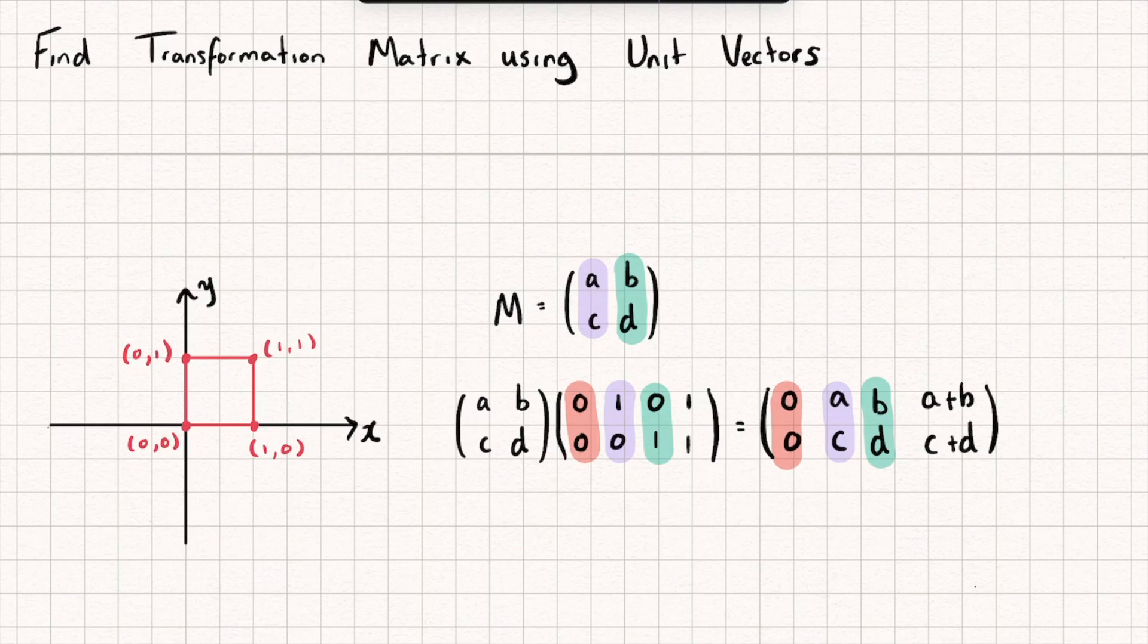And so hopefully you can see now that it's enough to just look at the point (1,0) and the point (0,1) and wherever they end up I can use that to define my transformation matrix.